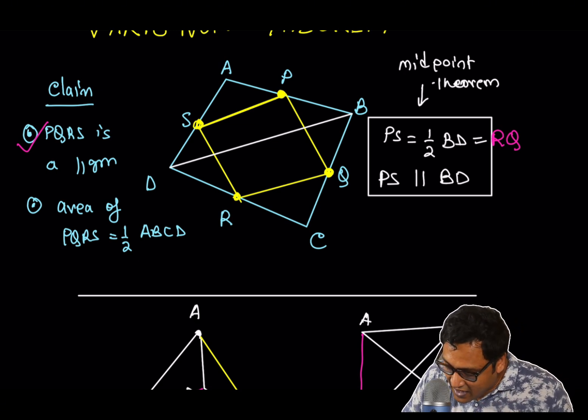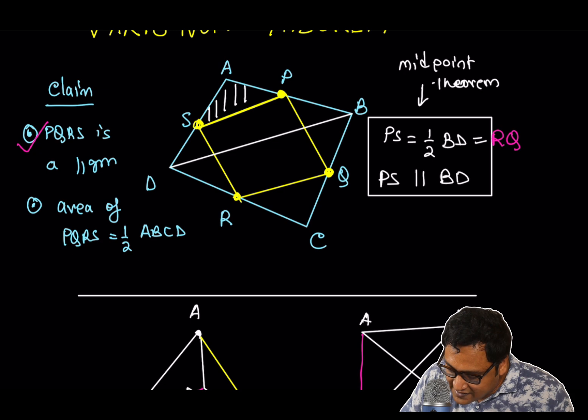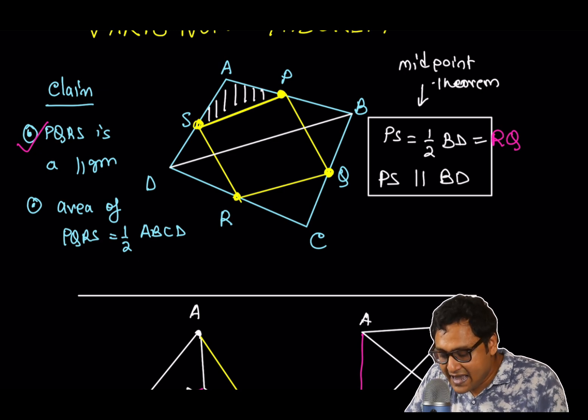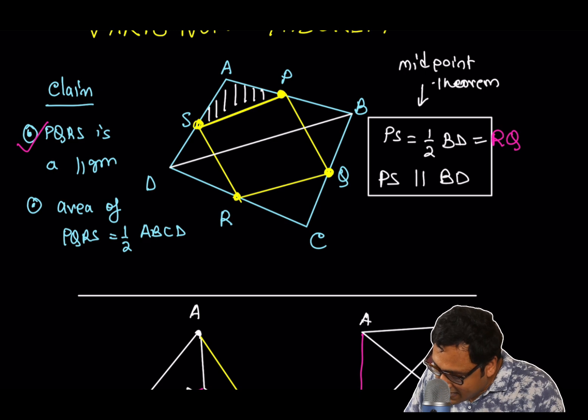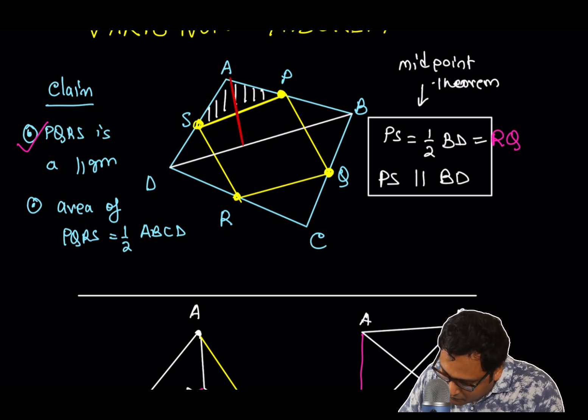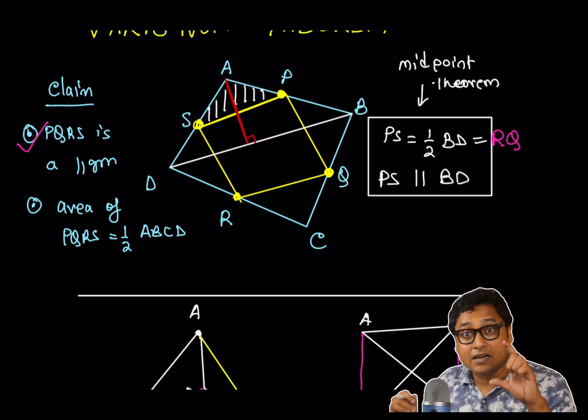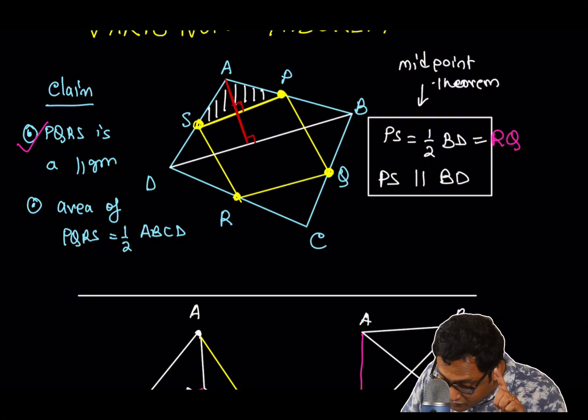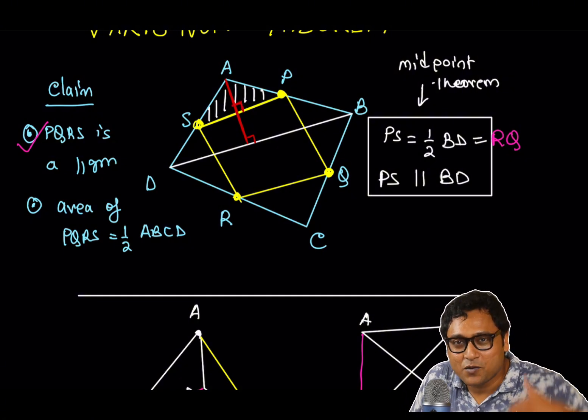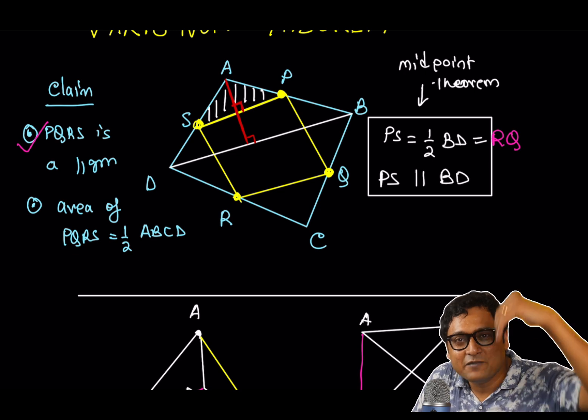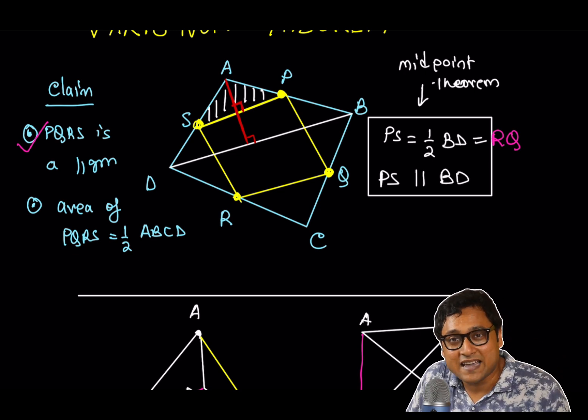So, how do I do that? I'll drop a perpendicular from A on BD. The perpendicular will also be perpendicular to PS. Because PS and BD are parallel. So, whatever is perpendicular to BD will be perpendicular to PS.